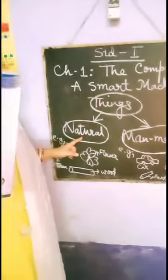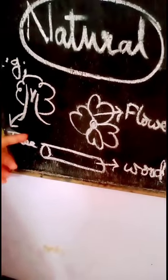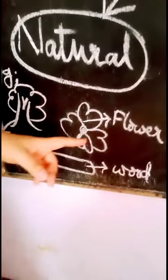Natural things are things that are available to us directly from nature. Examples are the tree, wood, and flowers.